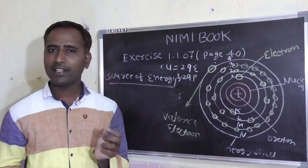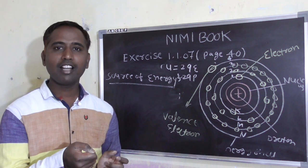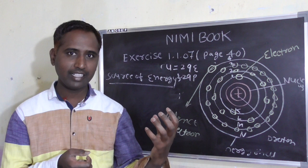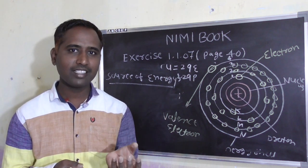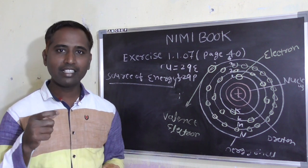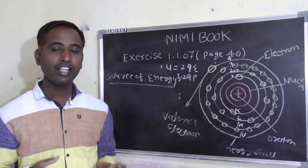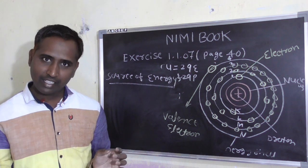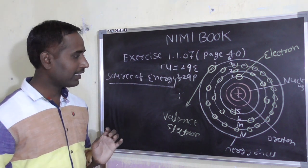हमारे घर में torch रहता है। Torch लाट दाने के बाद light आ जाता। वो light कहां से आती? Cell से आती। यह जो cell है, यह source of energy है। Ultimately source of energy बोले तो, जहां से ताकत आती है हमारे को, उसको हम source of energy बोलते हैं।